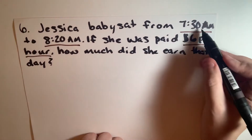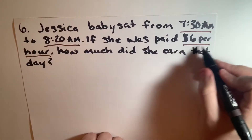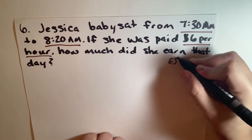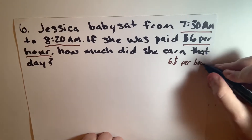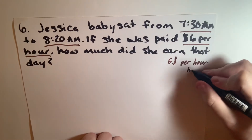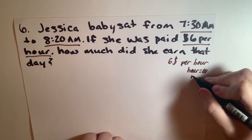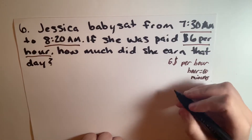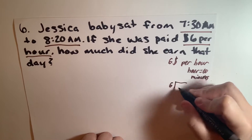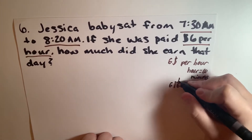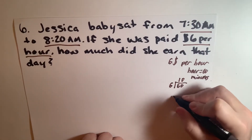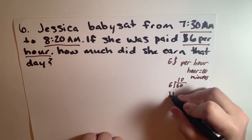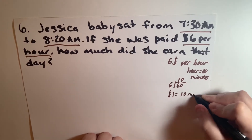So right away, we want to ignore the 7:30 and 8:20 and focus on the $6 per hour. If we have $6 per hour, and an hour equals 60 minutes, that means we can divide 6 into 60 to equal 10. So that means she makes $1 every 10 minutes.